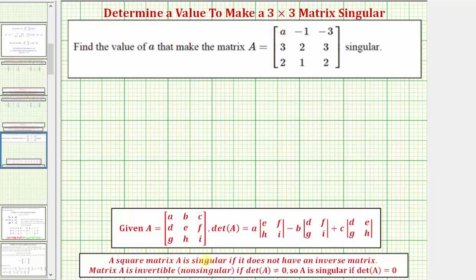A square matrix A is singular if it does not have an inverse matrix. We learned before that matrix A is invertible or non-singular if the determinant does not equal zero, which means matrix A is singular if the determinant of A does equal zero.